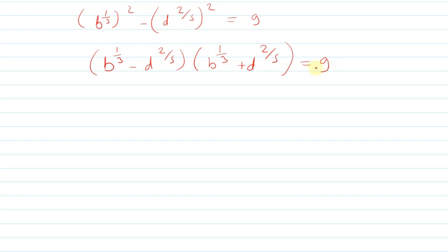So what can I write? 9 can be written as 1 times 9, or 9 times 1, or 3 times 3. Now let's consider these values. If this value is small and this is 9 and this is 1, that doesn't make sense.